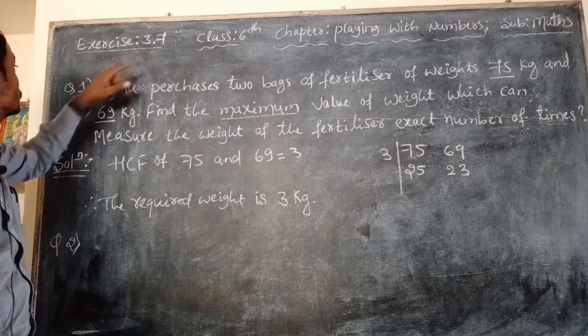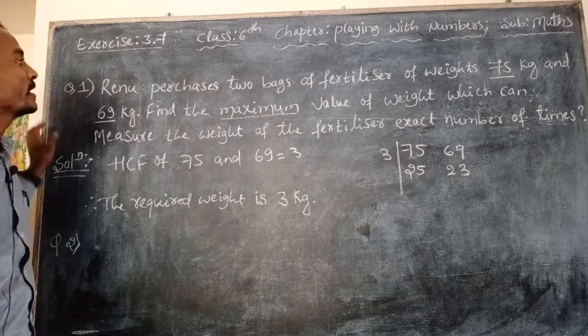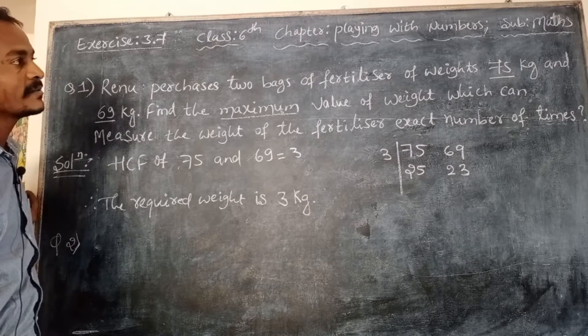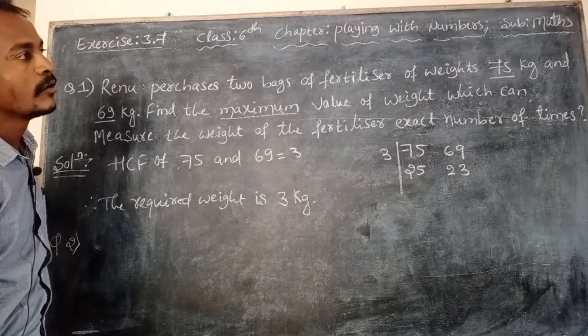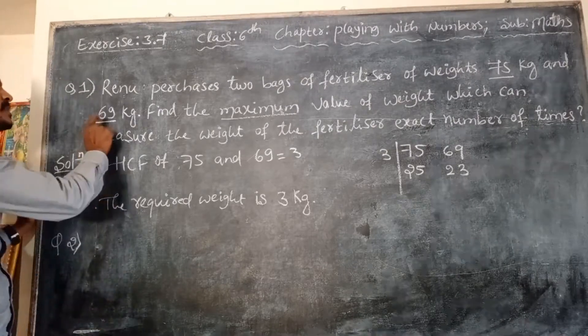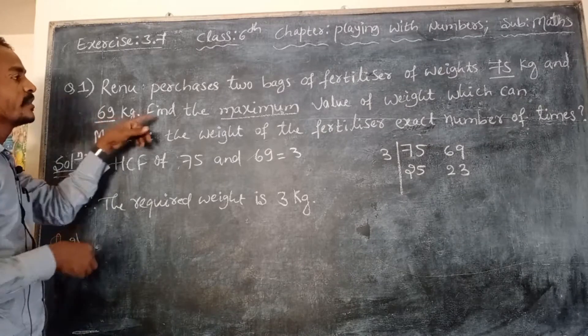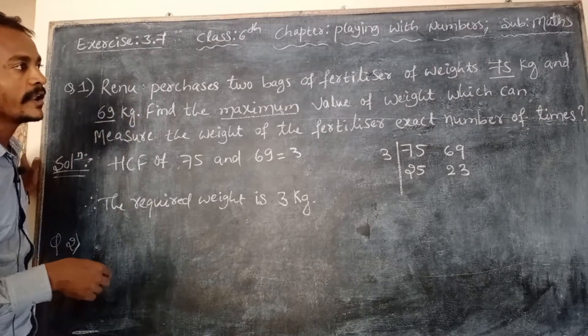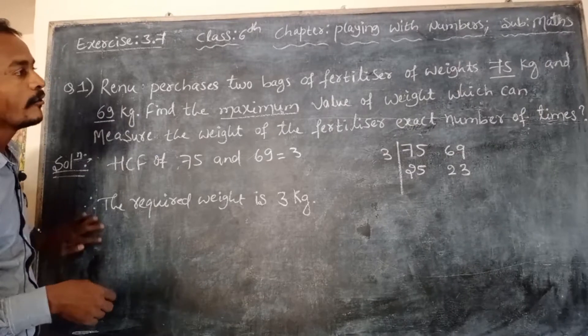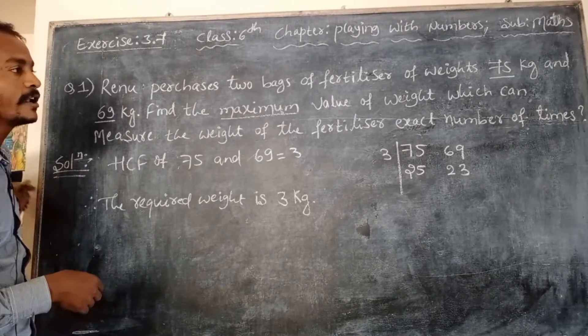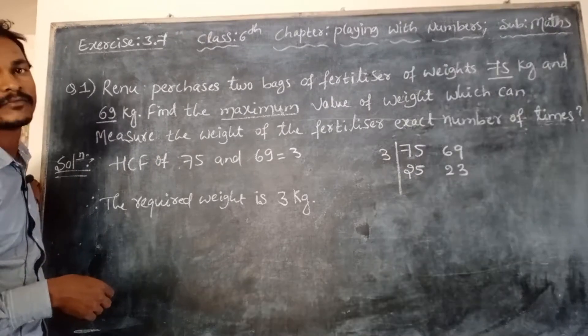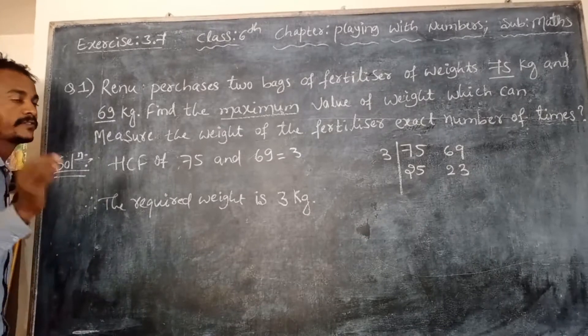Question number 1: Renu purchases two bags of fertilizer of weight 75 kg and 69 kg. Find the maximum value of weight which can measure the weight of the fertilizer exact number of times.